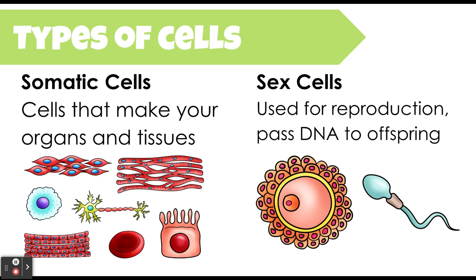Somatic, or soma in Latin, refers to the body. These are cells that make up the organs and tissues of, for example, the human body. So we have muscle cells, skin cells, nerve cells, blood cells, epithelial cells, white blood cells — the list goes on and on. The majority of cells in the human body are considered somatic cells; they're cells that make up the organs and tissues.